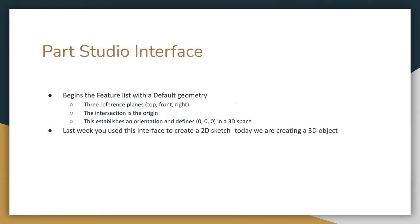The Part Studio interface is what you see when you first open your Part Studio documents. There are three planes: front, right, and left, bottom, and back. There's one point where you start creating your document called the origin. It's zero, zero, zero, and it is the only point that is always black, which means it cannot be moved.